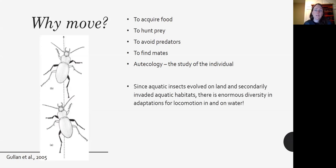Since aquatic insects evolved on land and then secondarily invaded aquatic habitats, there is an enormous diversity of adaptations for locomotion both in and on water.